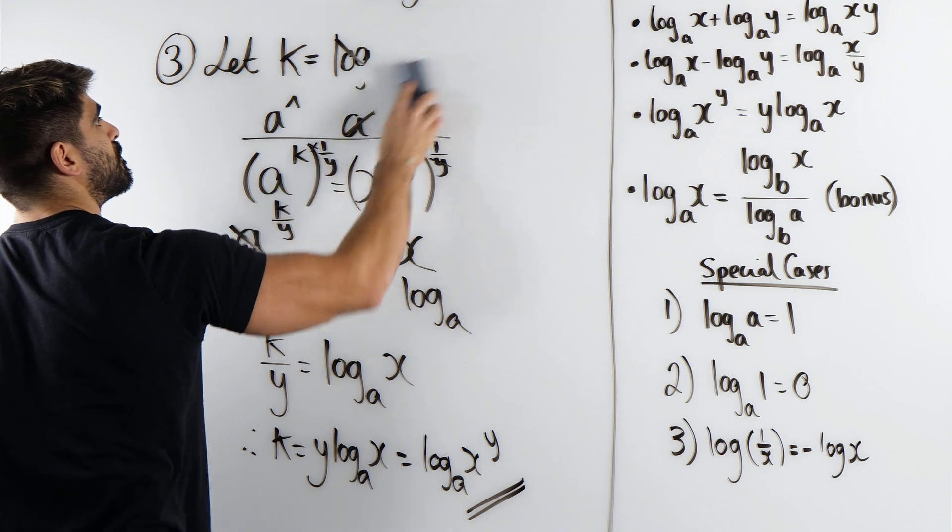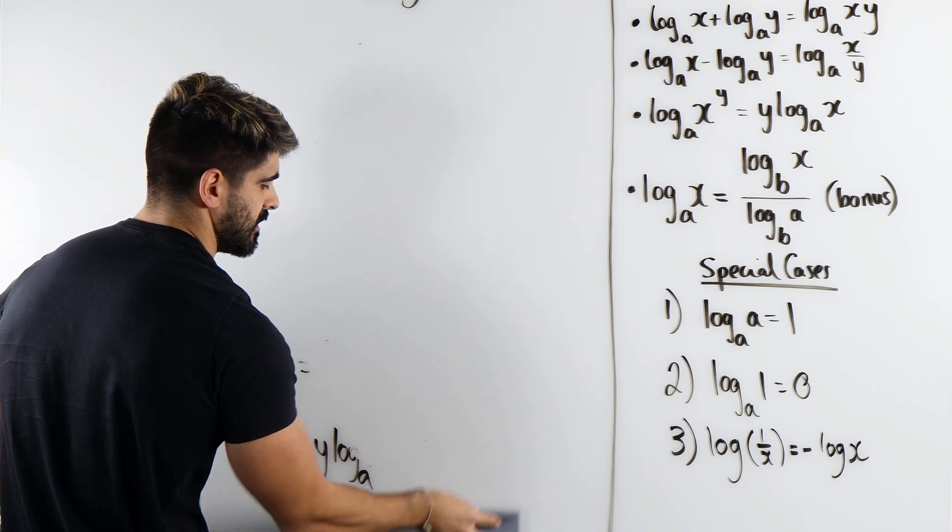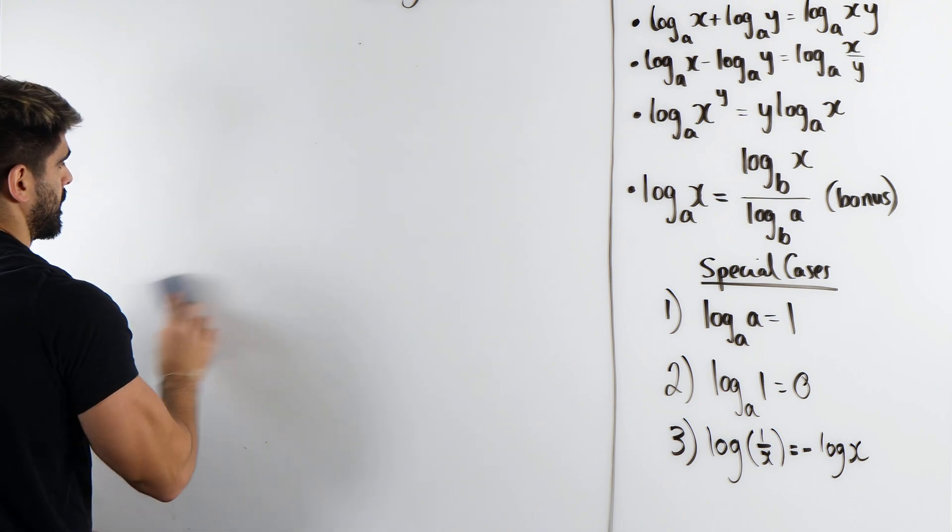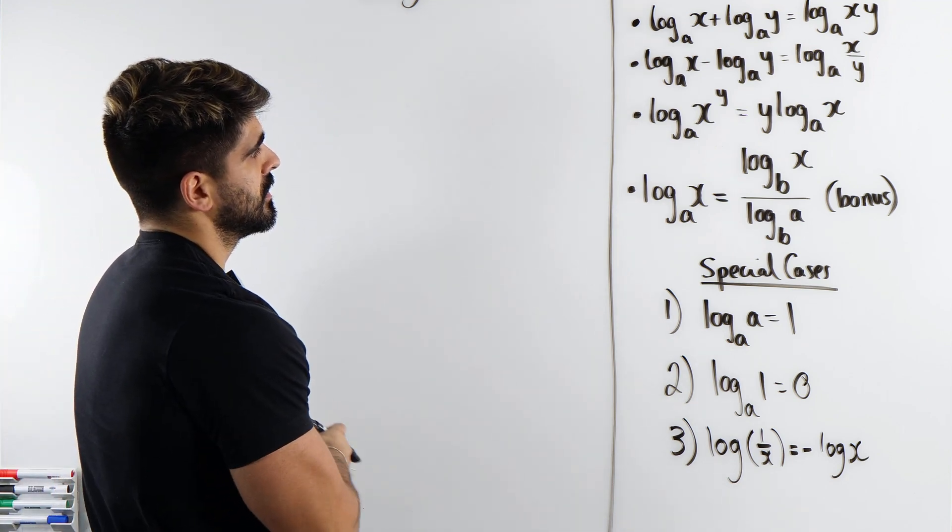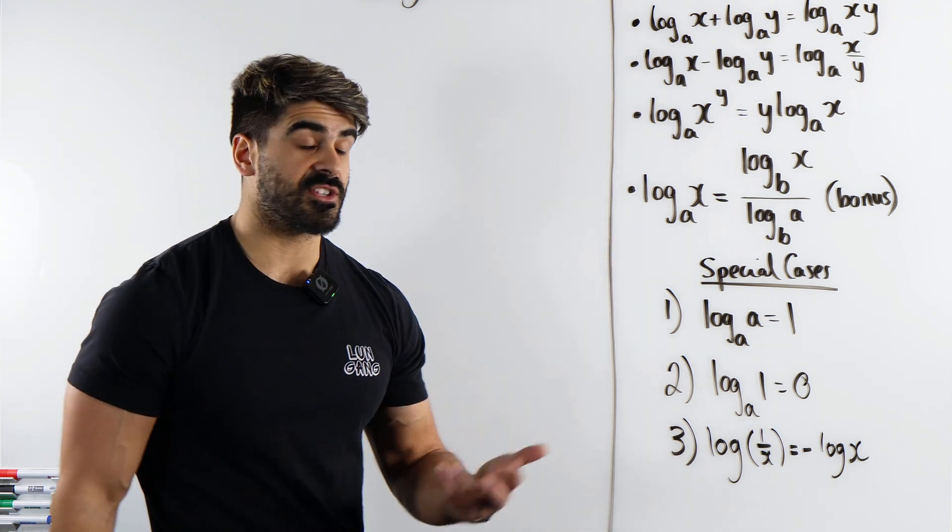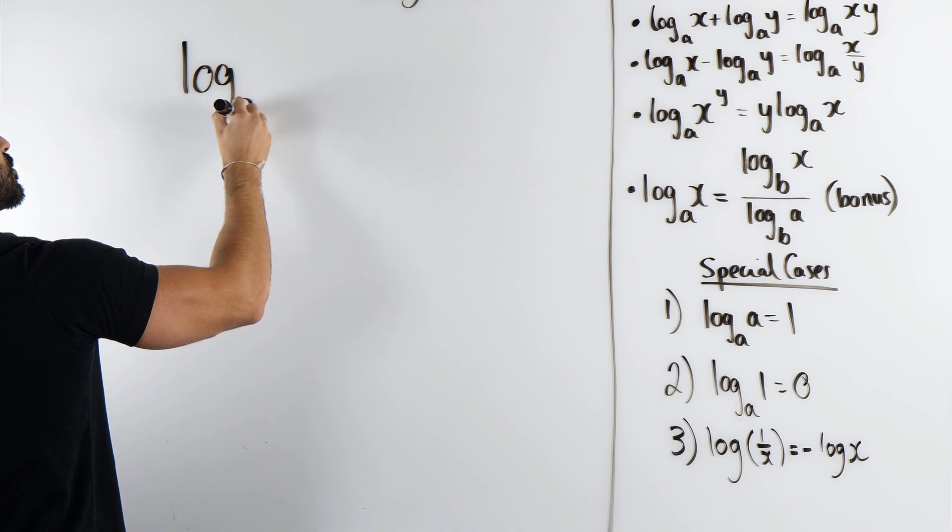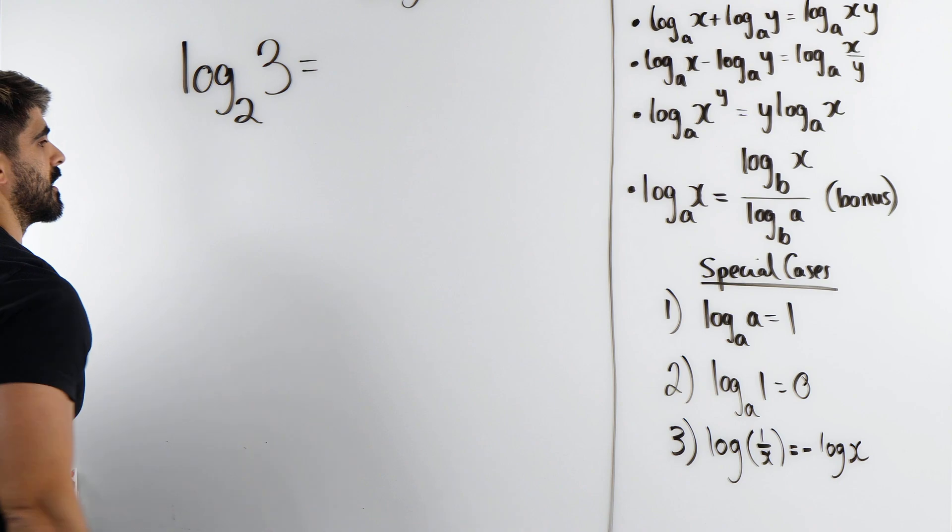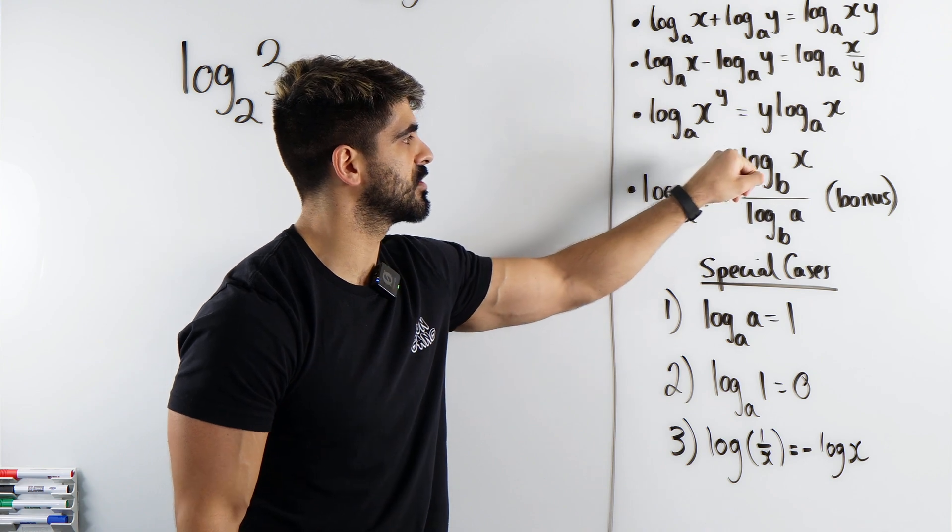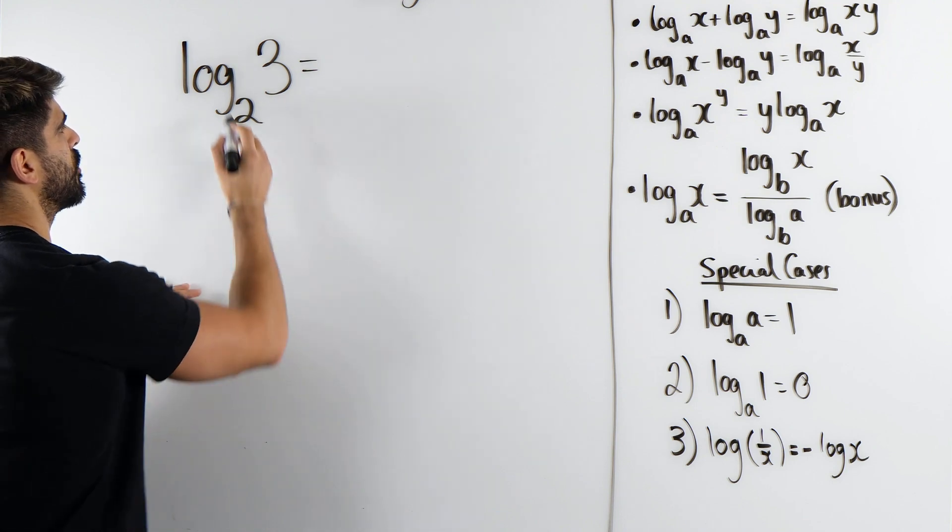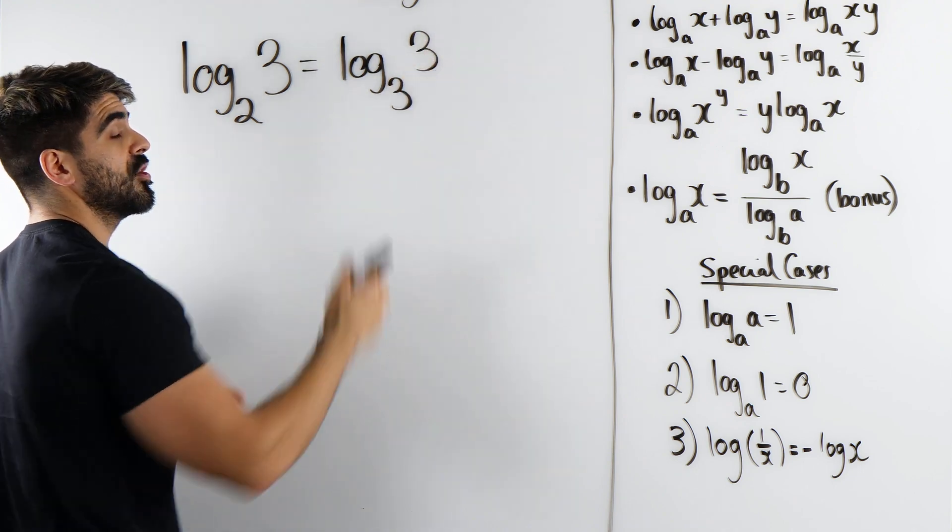This is the bonus, the change of basis formula. Now, like I said, if you are studying British curriculum, then you don't need to know this anymore. But it's actually a really handy rule. So what this is basically saying, I'll give you guys an example first, is say I wanted to do log base 2 of 3. I could basically rewrite this as a new base. I could say, look, I don't want to do base 2 of 3, I want to do log base 3 of 3, and the reason for that is I know that's 1.